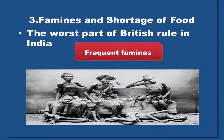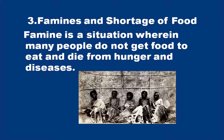The third important aspect of Indian economy at the time of independence was famines and the shortage of food. One of the most important parts of British rule in India was the frequently occurring famines. Famines are a situation where many people do not get food to eat and they die of hunger and diseases. Many people used to die of famine during the British rule. The famous Bengal famine is a very good example of the bad face of British rule in India.